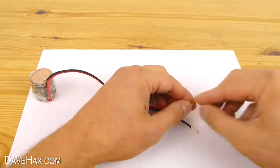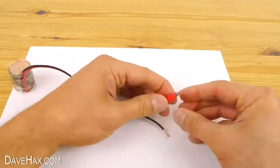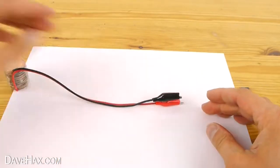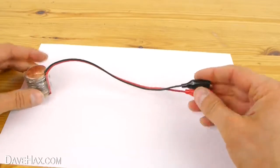I'm also adding a couple of insulated crocodile clips to the end of the wire to make it easy to connect to things. When you're done it should look like this.